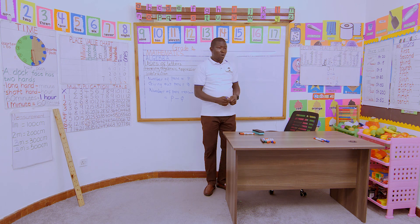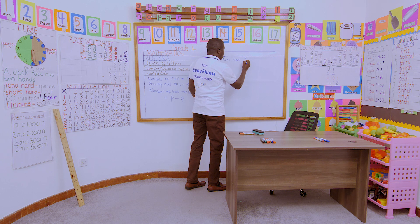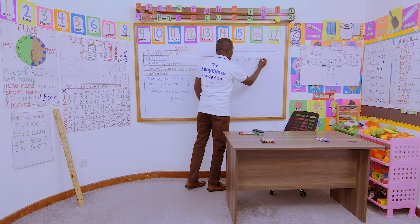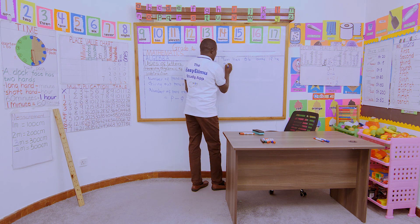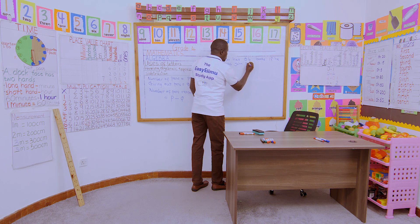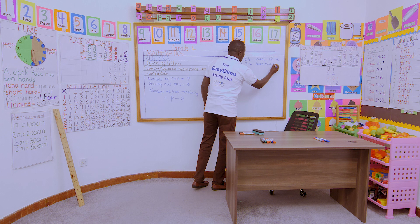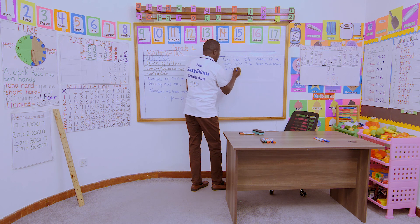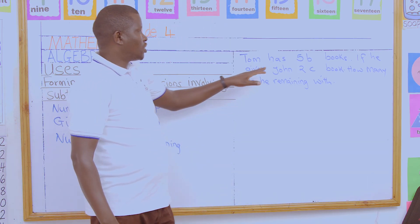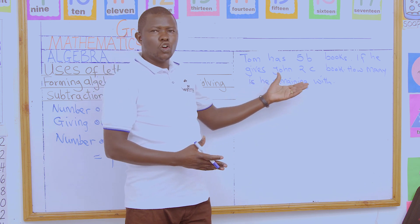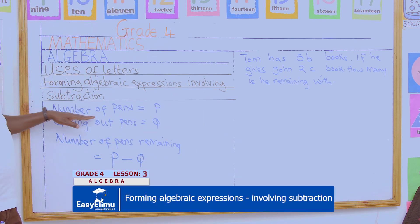Now in our groups, let us also form the following: Tom has 5B books. If he gives John 2C books, how many is he remaining with? This is our group activity — if Tom has 5B books and he gave John 2C books, how many books is he remaining with? Let us try to form an algebraic expression.